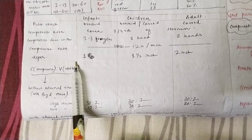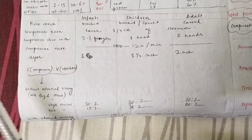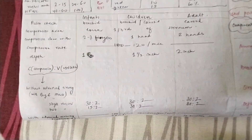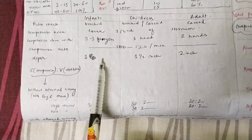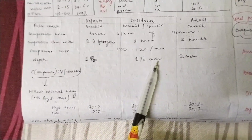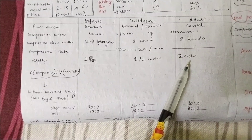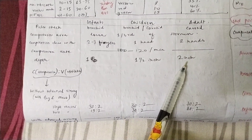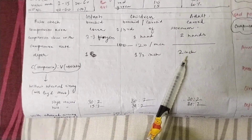What is the depth of chest compression? One inch in the case of infants, one and a half inches in the case of children, and two inches for adults.